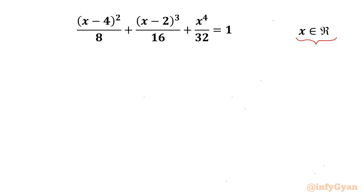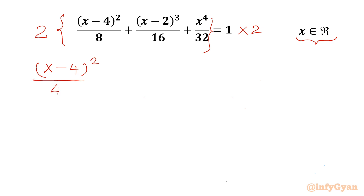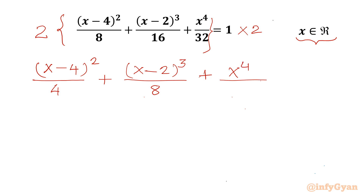So let's get started. I will multiply both sides by 2. So our equation will become (x-4)² / 4 plus (x-2)³ / 8 plus x⁴ / 16, and the RHS will be 2.